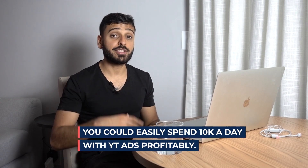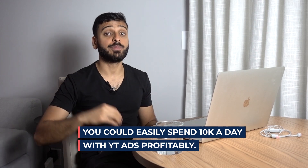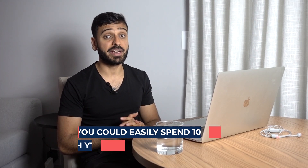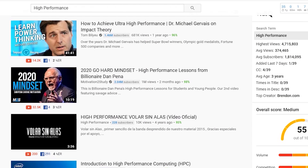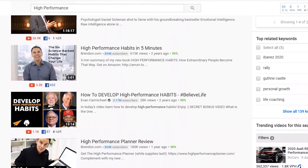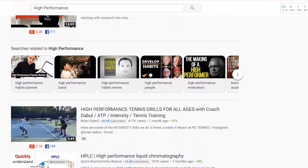With Google, you can spend a lot of money — you can easily spend $10K a day and get a great return on ad spend. The targeting allows you to get really qualified leads because you're targeting people who are watching educational videos and learning about your industry. If you're a high-ticket coach who teaches high performance, there are people watching those YouTube videos all day, every day. You're generating leads that are qualified because these people are very interested in exactly what you teach.